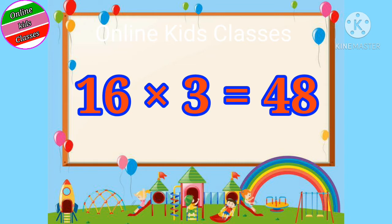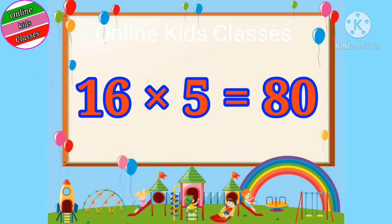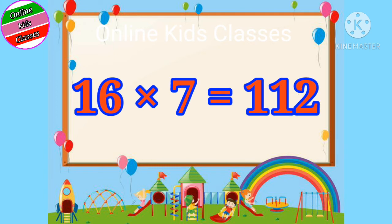16 threes are 48. 16 fours are 64. 16 fives are 80. 16 sixes are 96.